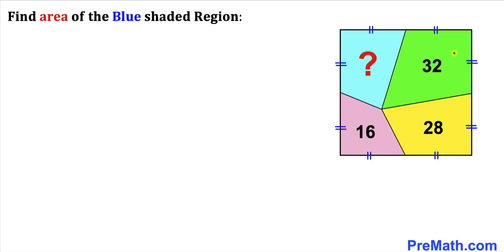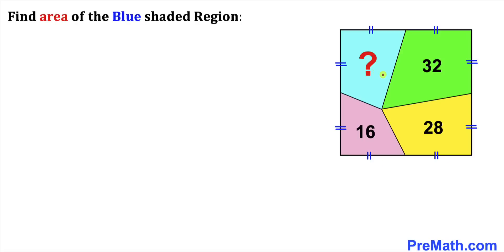Welcome to pre-math. In this video we have got a big square that consists of four different regions such that the area of the green one is 32 square units, the area of the yellow one is 28, the area of the pink one is 16, and moreover these side lengths are all equal in length. We are going to calculate the area of the blue shaded region.